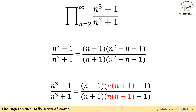To solve this problem, let's start by working on the general term that this product has. The general term is n cubed minus 1 over n cubed plus 1. We are going to simplify it a little bit to be able to write it as a telescoping product.